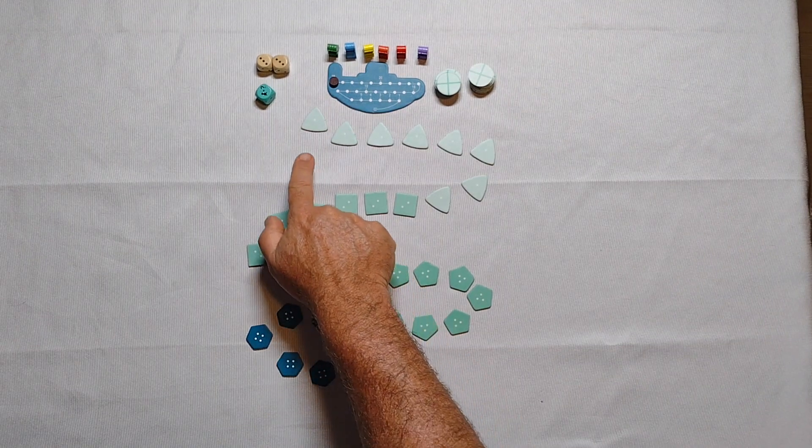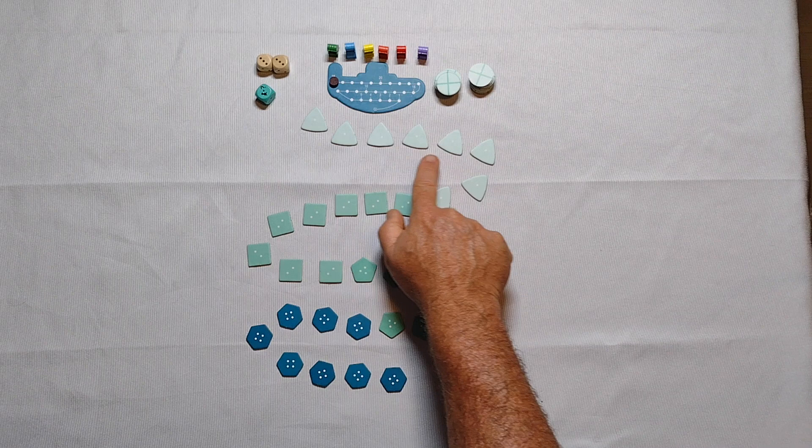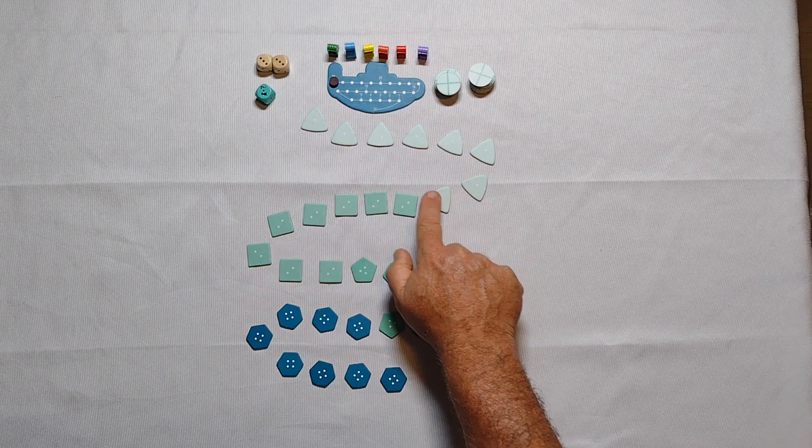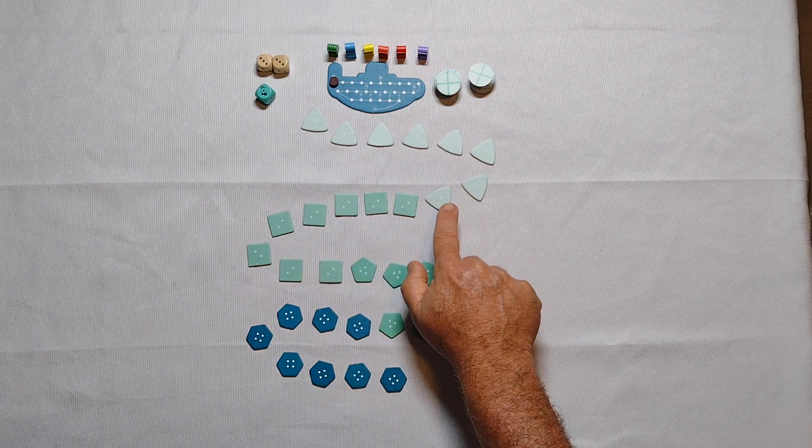Then find all the triangular treasure markers with a single dot, shuffle them, and put them in a serpentine line below your ship.